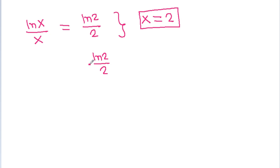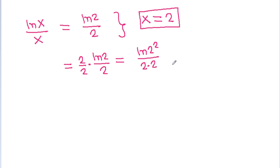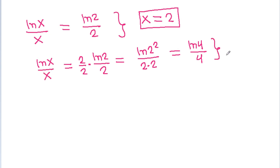And we have ln 2 by 2, and if we multiply it with 2 by 2, then it will be equal to ln 4 by 4. It is ln x by x. So from here, we can get x is equal to 4.